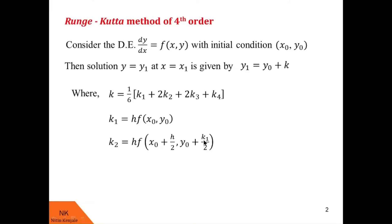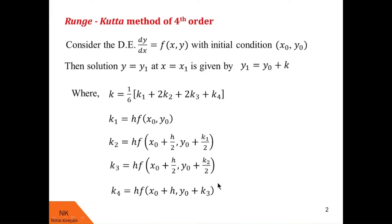Note that this k₁ is calculated as shown. k₃ is given by h·f(x₀ + h/2, y₀ + k₂/2), where this k₂ comes from the previous step. And finally, k₄ is given by h·f(x₀ + h, y₀ + k₃), where k₃ is from the previous calculation.